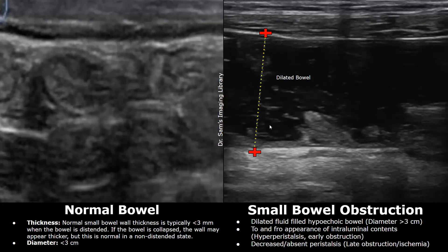In early obstruction, you may find hyperperistalsis. On real-time imaging, a to-and-fro appearance of the intraluminal contents is seen. The intestinal contents moving to and fro indicate hyperperistalsis — an increased peristaltic movement usually seen in early obstruction.